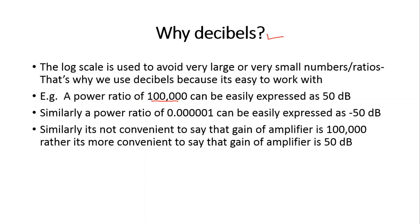For example, a power ratio of 1 lakh (10 to the power 5) can easily be expressed as 50 dB. Similarly, a very small ratio of 0.00001 can easily be expressed as minus 50 dB, and 10 to the power 8 is simply 80 dB. It is also more convenient to say the gain of an amplifier is 50 dB than to say the gain is 1 lakh. That is why we use decibels.